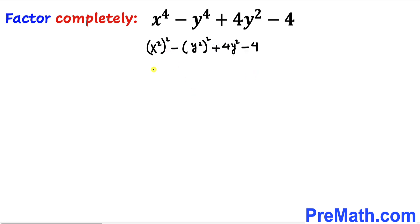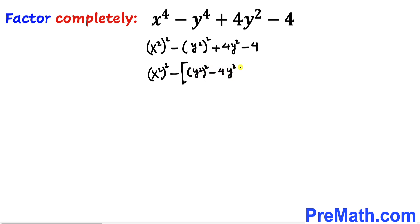So therefore this expression can be written as (x power 2) power 2 minus the bracket containing y square squared, minus 4y square, plus 4.